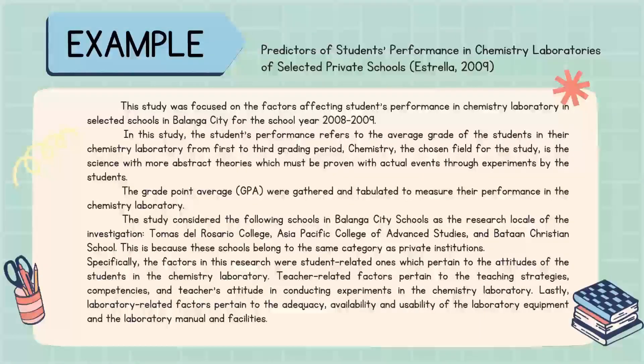Here is an example of a scope and delimitation from the research entitled 'Predictors of Students' Performance in Chemistry Laboratories of Selected Private Schools.' You may want to pause this video to read the text, or you may refer to your learning activity sheets number 5.